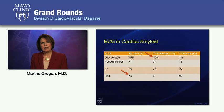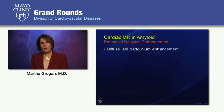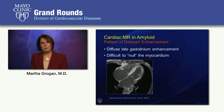Cardiac MRI has really aided in the diagnosis of this disorder due to diffuse late gadolinium enhancement and a characteristic pattern of difficulty nulling the myocardium. Cardiac amyloid can be detected by cardiac MRI with about 90% sensitivity and specificity.